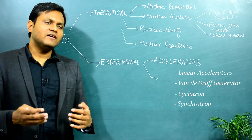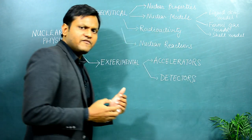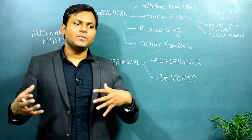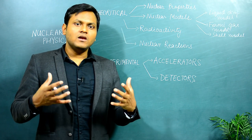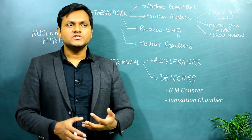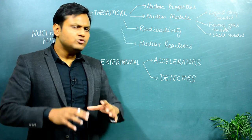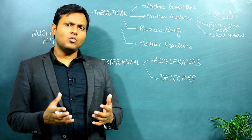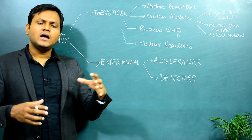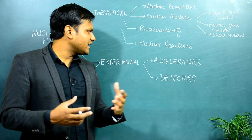Alongside accelerators, there is also the development of different kinds of nuclear detectors. It is not sufficient to just induce a nuclear reaction — you also need to detect new particles and measure the energy of particles emerging from a nuclear reaction. Development of technology led to different kinds of nuclear detectors such as GM counters, ionization chambers, proportional counters, gas chambers, and scintillation detectors. A course in nuclear physics covers both the theoretical aspects — properties, modeling, nuclear reactions — and the experimental aspects.